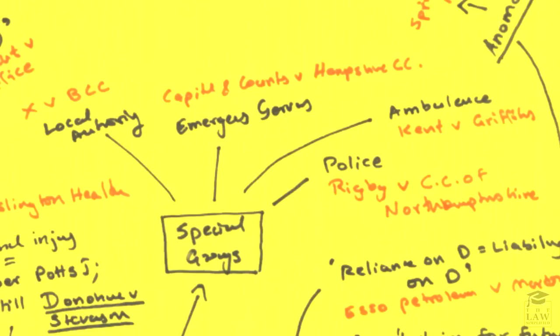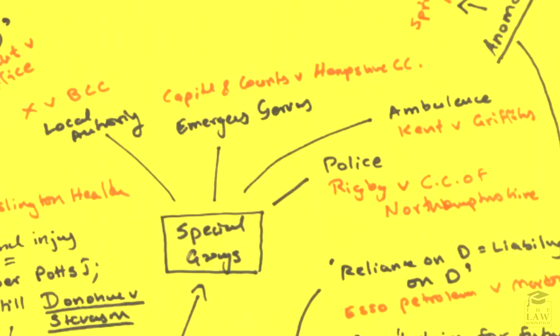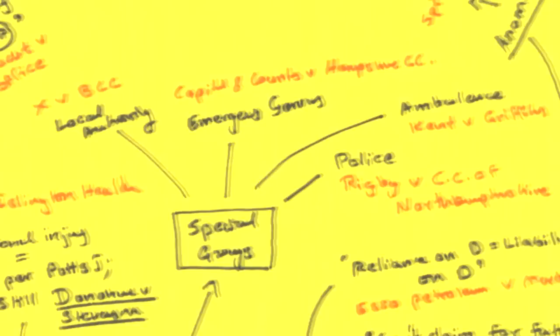So have a look at each of these cases, specifically cases such as Rigby v Chief Constable of Northamptonshire, Capital and Counties v Hampshire County Council as we looked at earlier, version in the situation in the case of omissions, and X v BCC or Bedfordshire County Council in the case of a local authority.